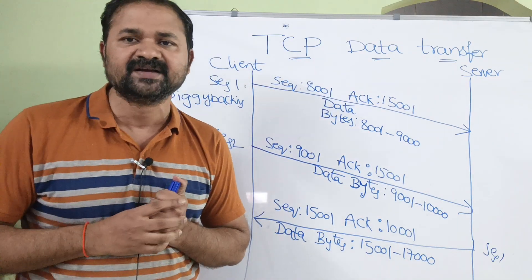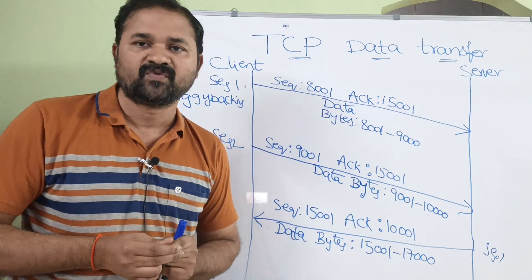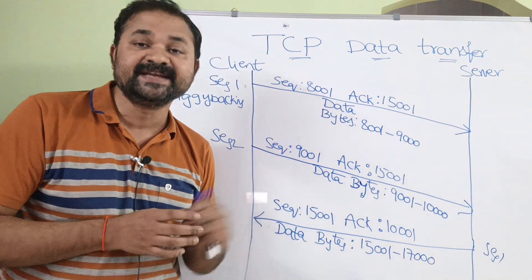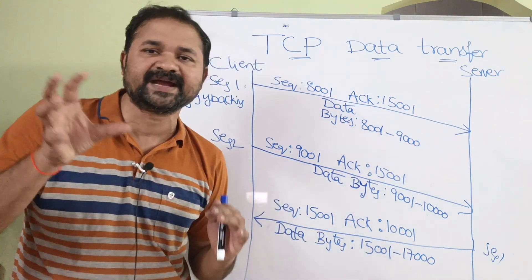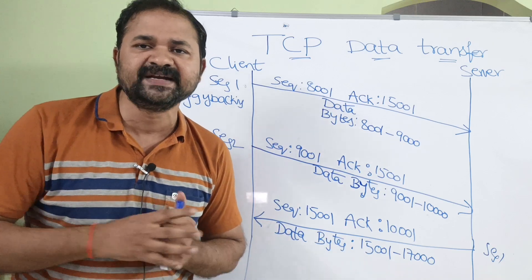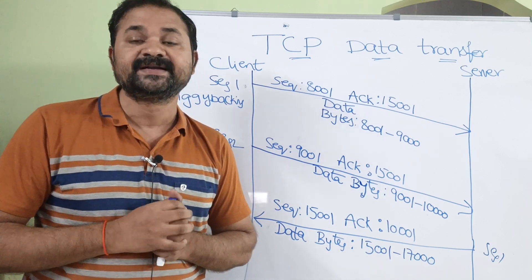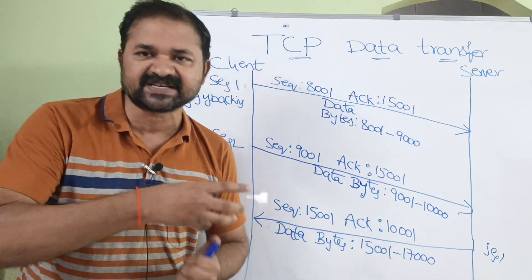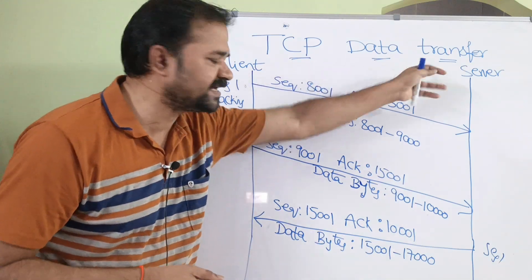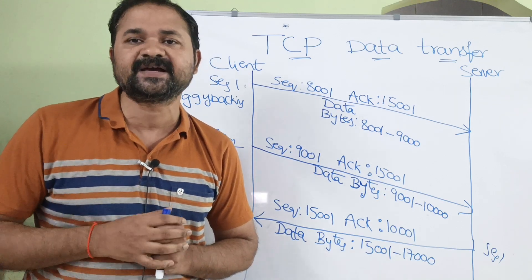This is about TCP data transfer. Both client and server can send data simultaneously, so it uses full duplex communication. In the next video, we will discuss TCP connection termination. TCP connection has three phases: the first is connection establishment, the second is data transfer, which we covered in this video, and the third is connection termination.